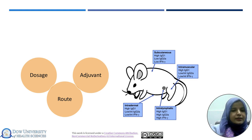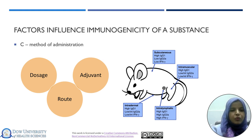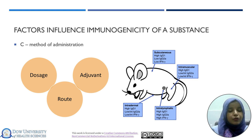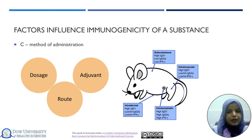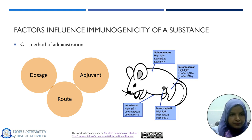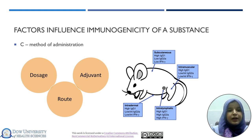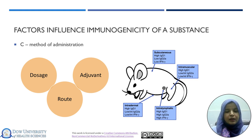In addition to the biological system, other factors also influence the immunogenicity of a substance, including the method of administration of the Immunogen. This includes the dosage of the antigen or Immunogen, the route by which the antigen is administered, and whether the antigen is administered with adjuvant or without adjuvant. The administration route strongly influences the immune response. For example, an antigen administered intravenously is carried first to the spleen, whereas an antigen administered subcutaneously moves first to the local lymph node. So different kinds of immune response will be generated.